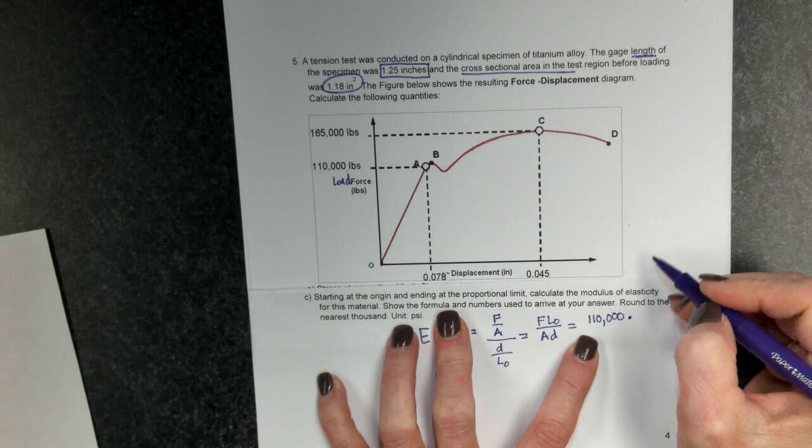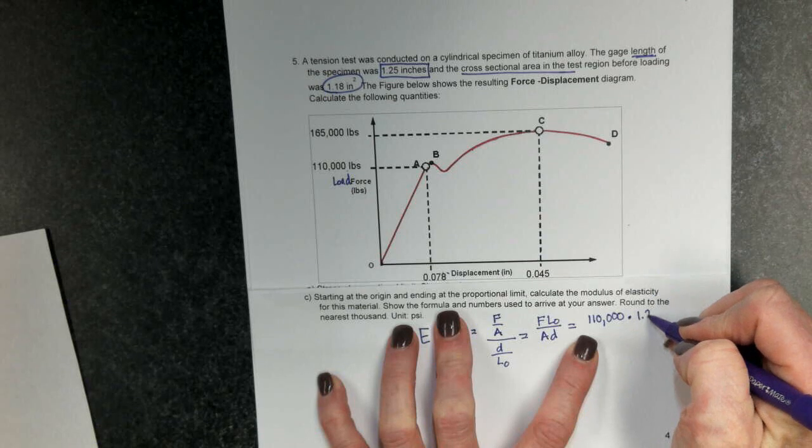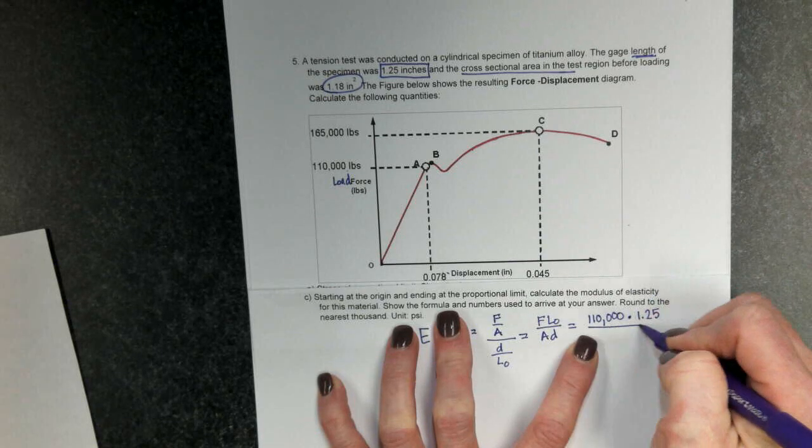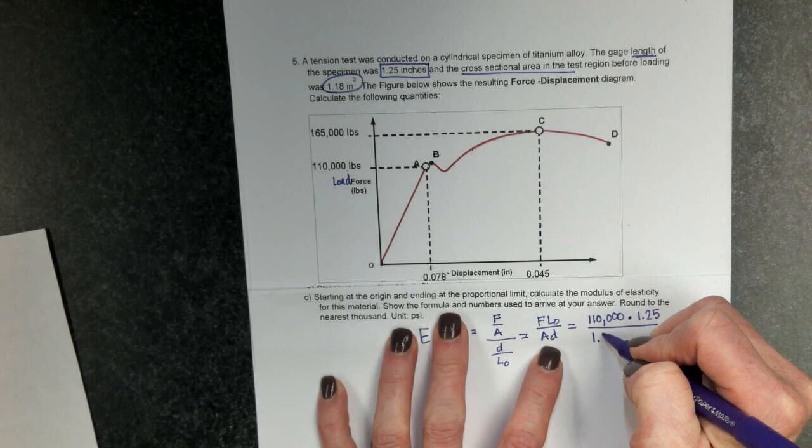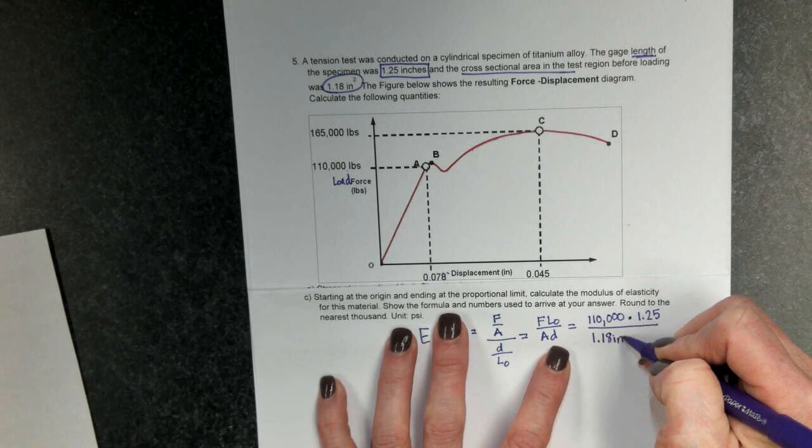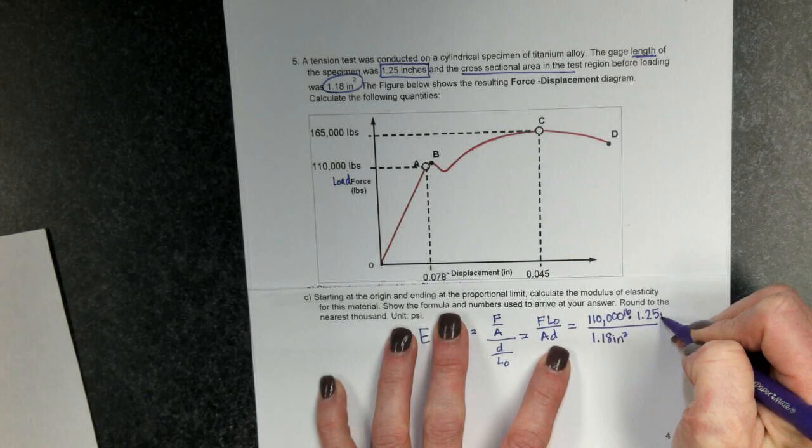The original length was 1.25. The area was 1.18. This is pounds. This is inch.